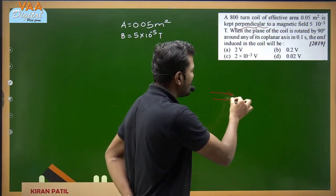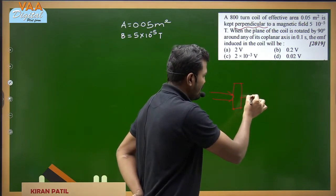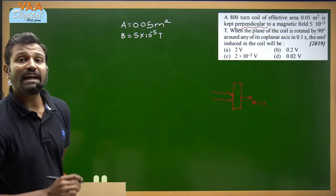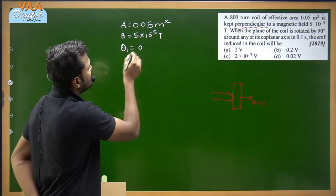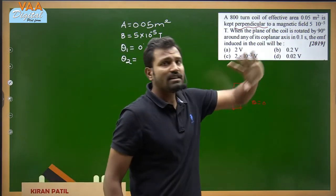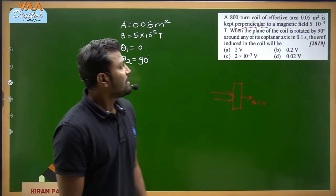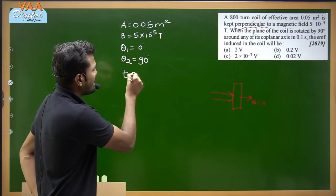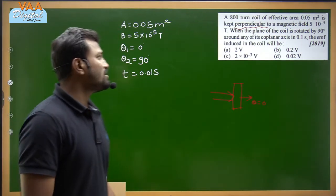When the plane is perpendicular to the field, the area vector and the magnetic field make angle θ = 0°. So θ₁ (initial angle) is 0° and θ₂ (after the 90° rotation) is 90°, around any of its co-planar axis. Time is also given: dt = 0.01 seconds. We need to find the EMF induced in the coil.